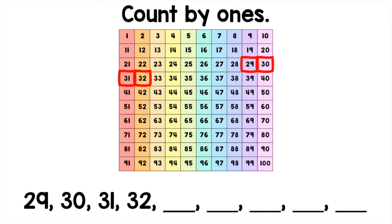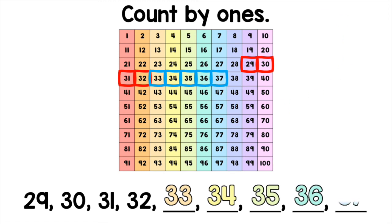To find the next 5 numbers, we continue counting on by ones: 33, 34, 35, 36, 37.